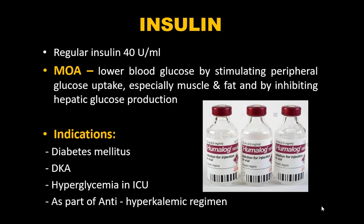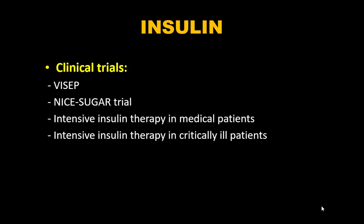Regular insulin is used in ICUs. It contains 40 units/mL. Mechanism: lowers blood glucose by stimulating peripheral glucose uptake (especially muscle and fat) and inhibiting hepatic glucose production. Indications: diabetes mellitus, diabetic ketoacidosis, hyperglycemia in the ICU, and as part of the anti-hyperkalemic regime — the GI drip, where 1 unit of insulin is used per 2.5 g of dextrose.